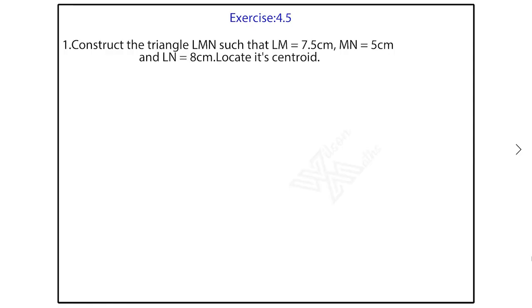Now we are going to see exercise 4.5, question number 1. Construct the triangle LMN such that LM equal to 7.5 cm, MN equal to 5 cm, and LN equal to 8 cm. Locate its centroid.